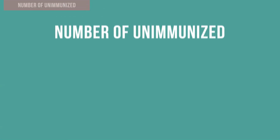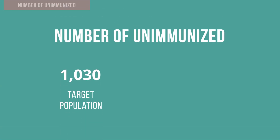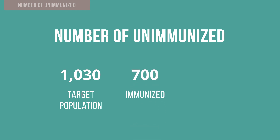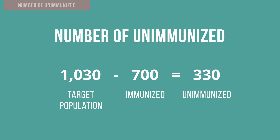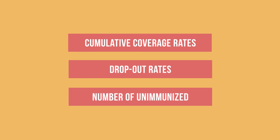For example, if there are 1,030 infants in the target population and 700 infants have been immunized with pentavalent 1, that means there are 330 unimmunized infants. It is going to be really helpful for you to have a chart that shows how the communities, health facilities, or districts in your area are performing against these three measurements.